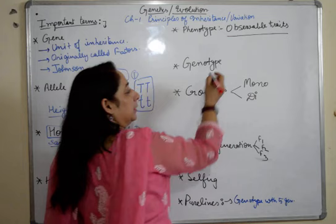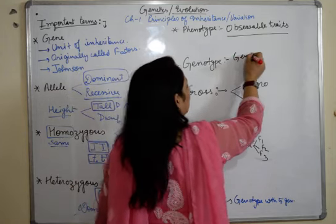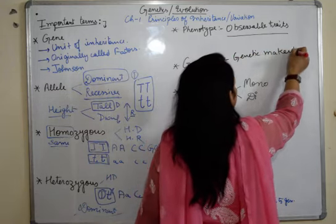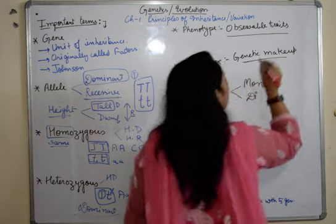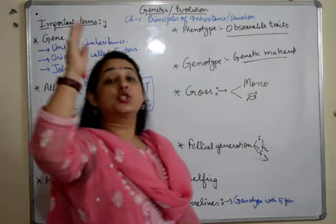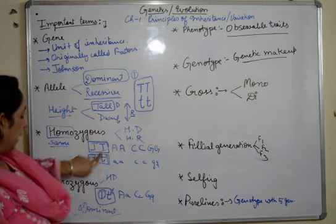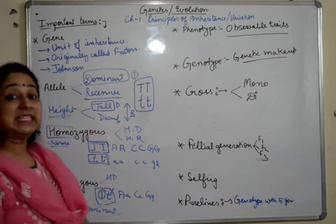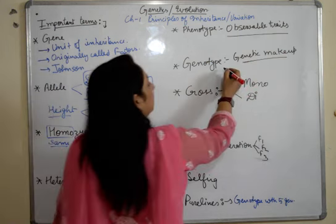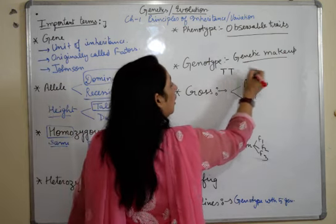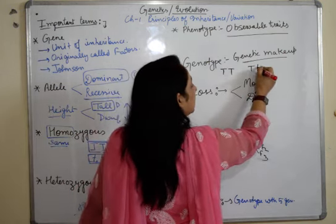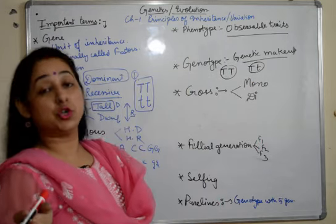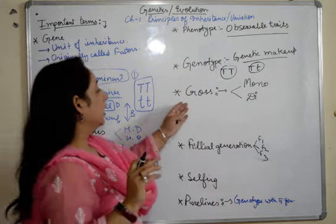Genotype is the genetic make-up. We may know that a plant is tall, but genotype tells us whether it is homozygous tall or heterozygous tall. That is the genotype — the arrangement of the genes.